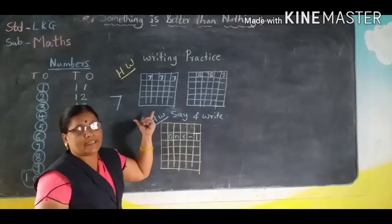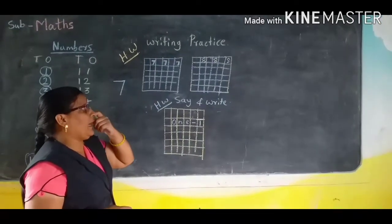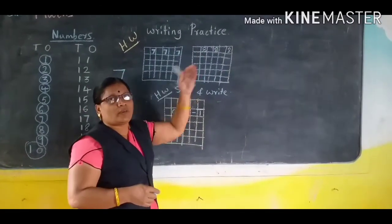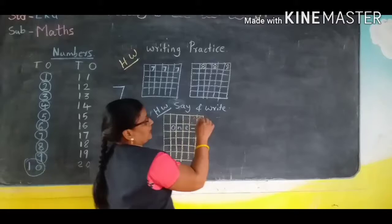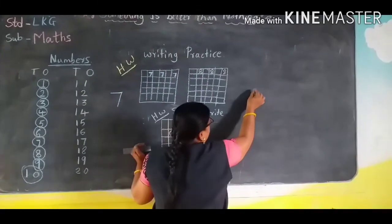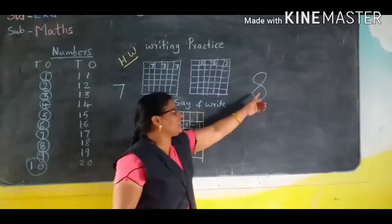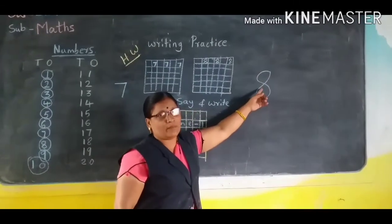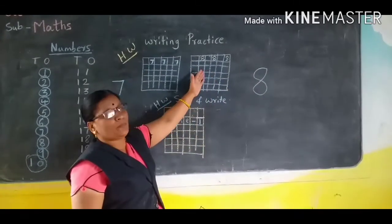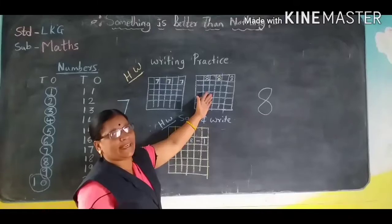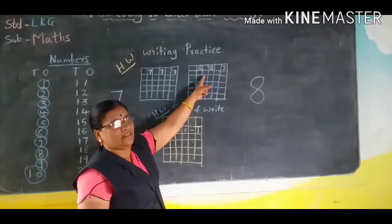Write neatly that seven. And then you have to write the eighth number practice also. How to write the eight here? Like this time, yes, and you connect that. See, this is eight. What is this number? Eight. In another page, you have to do the writing practice, eight.